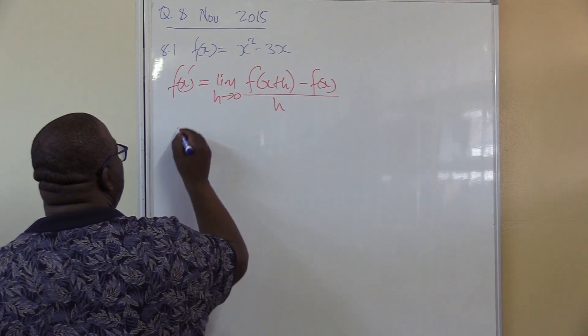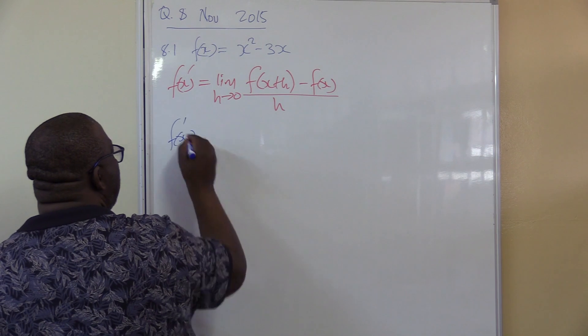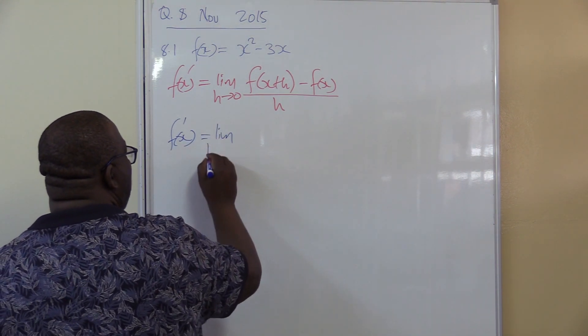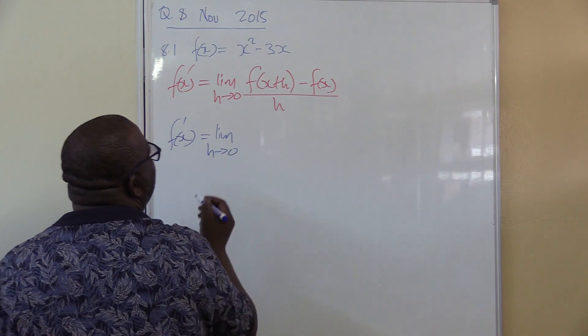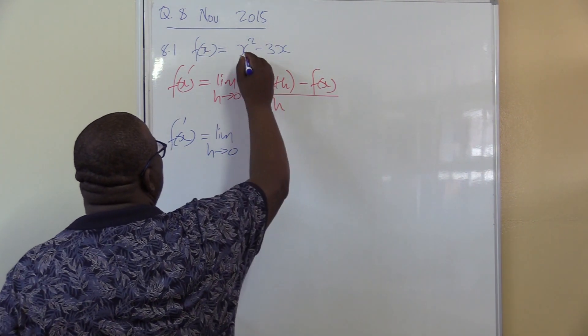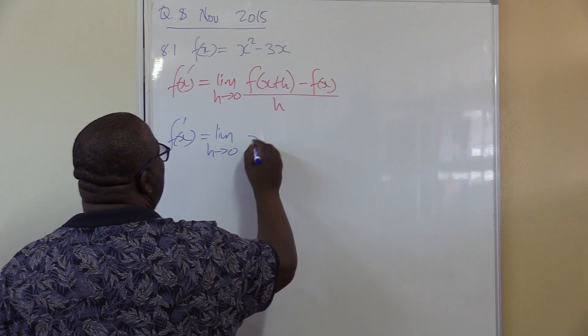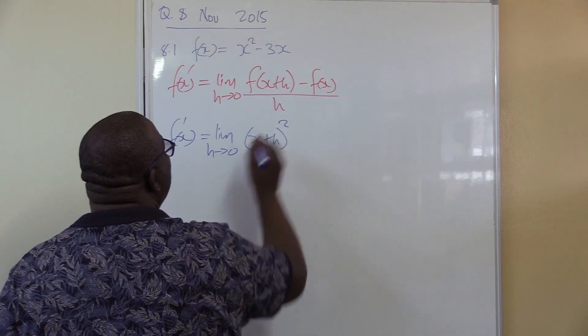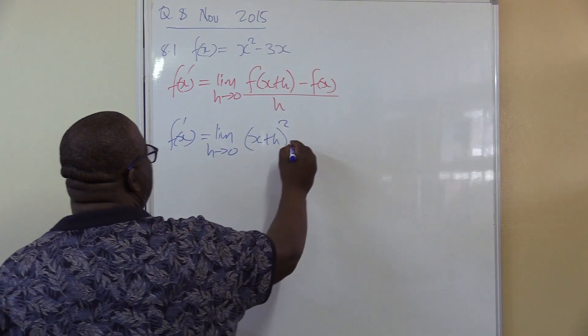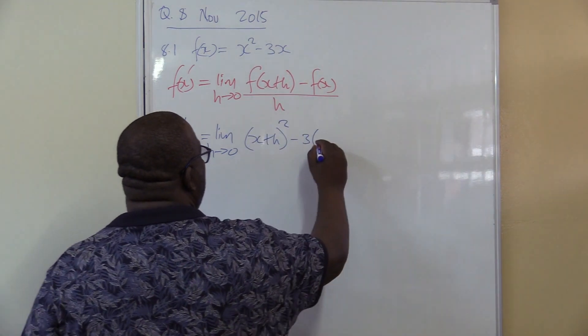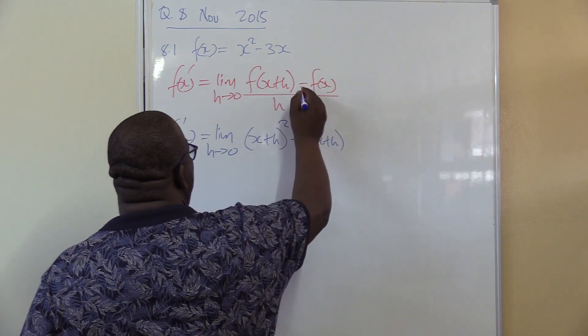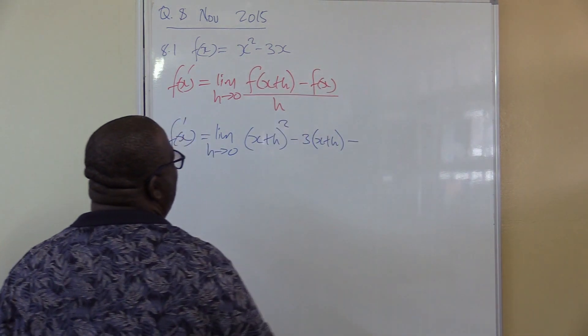Once I'm done with x plus h, then I'm subtracting f of x. So my f of x prime, my average gradient will then be equals to the limit as h approaches zero. I'm dealing with this now. Whether it's x, I'm pushing x plus h. So it's going to be x plus h. How is this x? It is squared. I still have another x. So it's going to be minus three into whether it's x, I push in x plus h. We no longer have x's here.